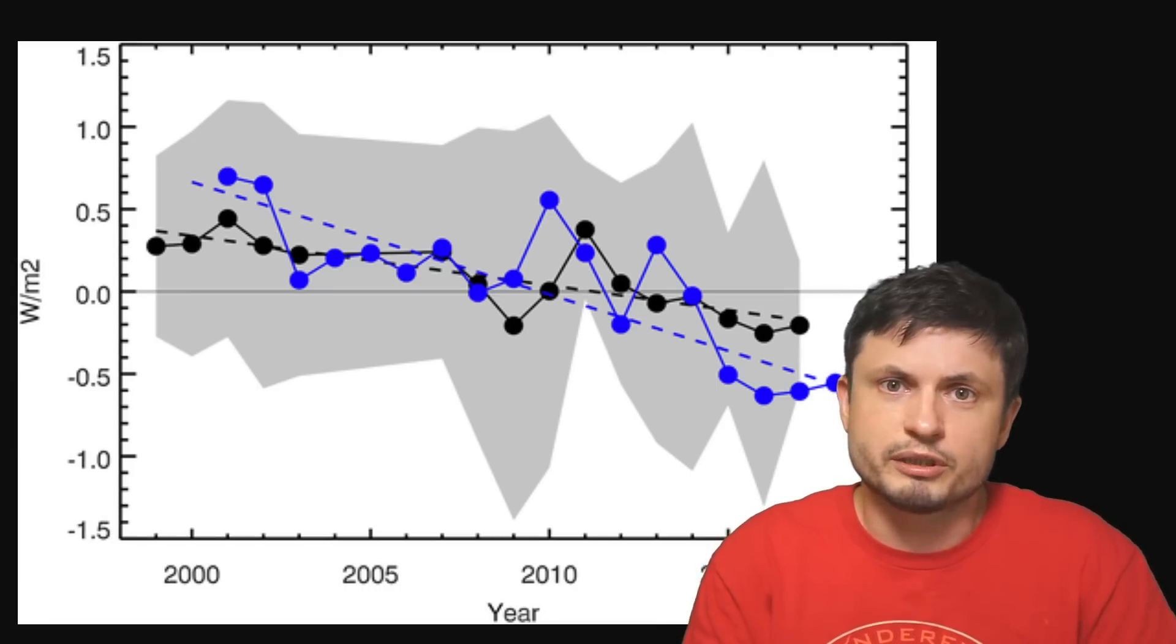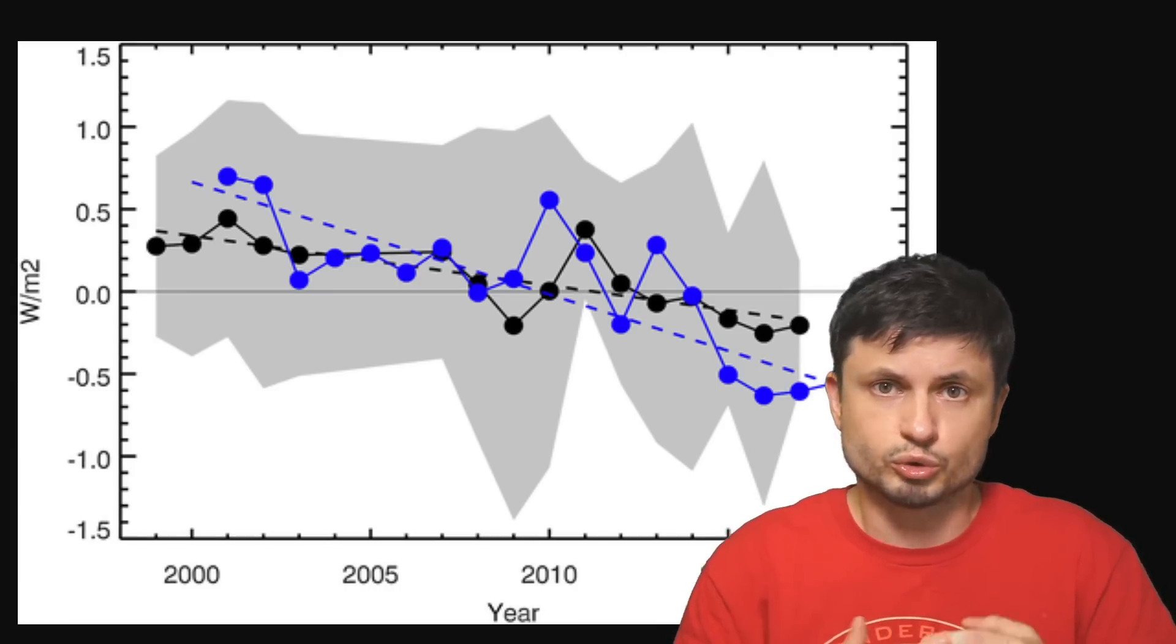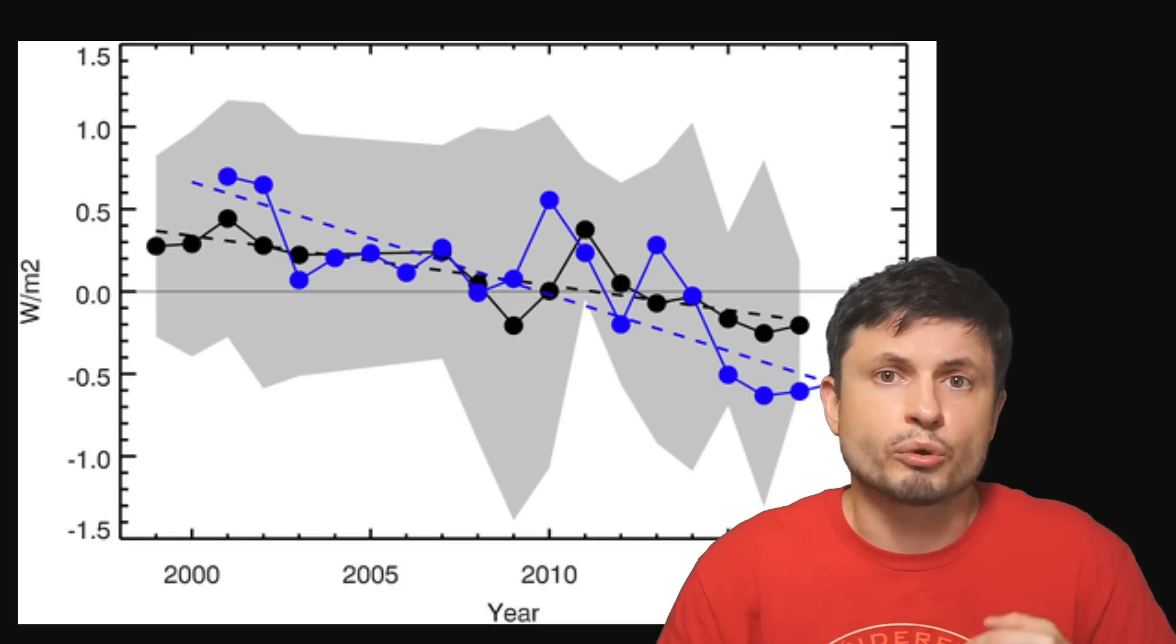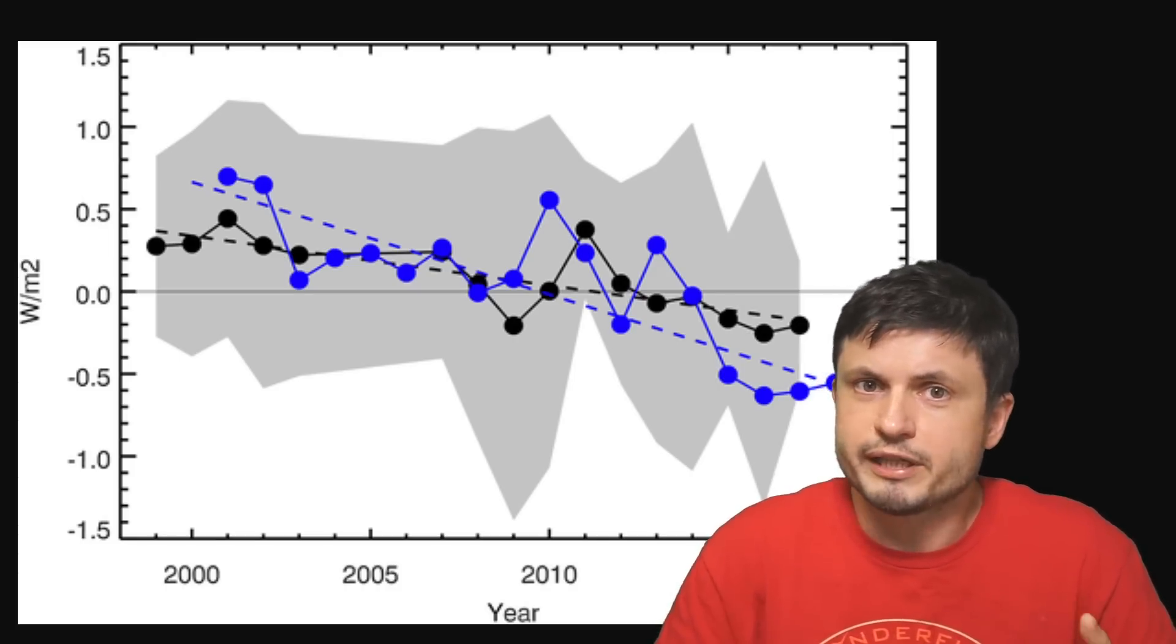But before I talk about the potential implications, let's talk about the more interesting part first. How exactly did they measure all of this? How do you measure the total reflectivity of the entire planet for the past few decades? Well there's a really interesting technique and it's called planet shine, also known as earth shine. And here's how this works.